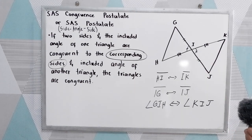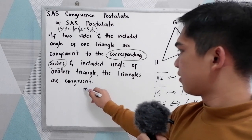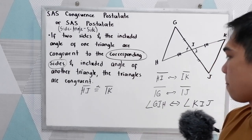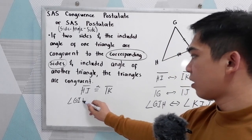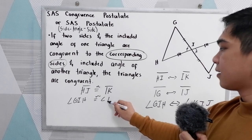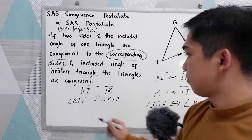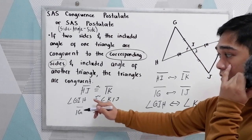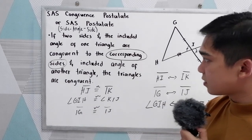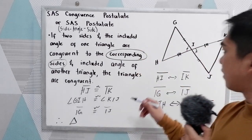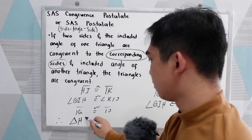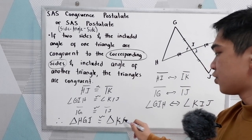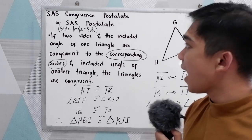So we can say that angle GIH corresponds to angle KIJ. After finding the corresponding parts of the triangles, we can now conclude that HI is congruent to IK, angle GIH is congruent to angle KIJ, and segment IG is congruent to segment IJ. So we now have the side angle side. Therefore, triangle HGI is congruent to triangle KJI. That is the SAS postulate.